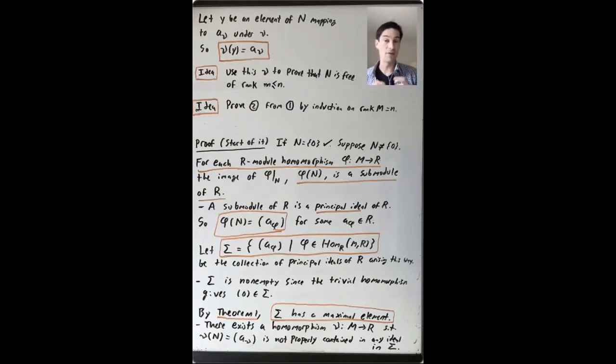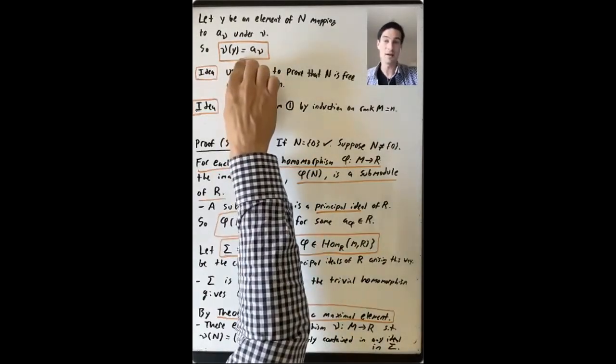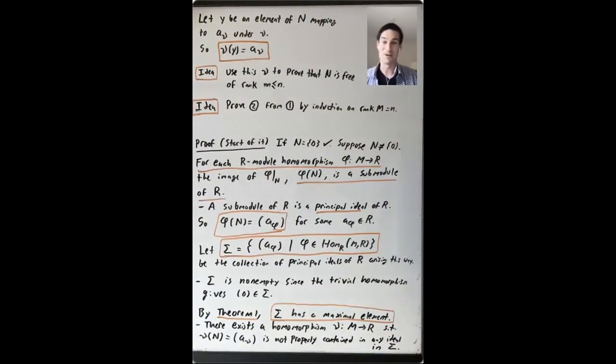So there's still a lot more to do in the proof of theorem 4. I find this to be one of the most complicated arguments of the whole course. So we'll stop here, because now at least we've explained why we started this lecture by proving this theorem 1, and we'll pick up in the next lecture from here, and we'll show how to prove theorem 4, and the rest of the main theorem, the classification of modules over a PID.